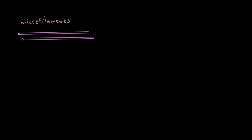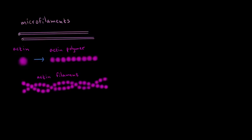Microfilaments are found in the cytoplasm and are composed of a protein known as actin. Many molecules of actin will join together to form an actin polymer, and then the actin polymers will twist around each other to form an actin filament.